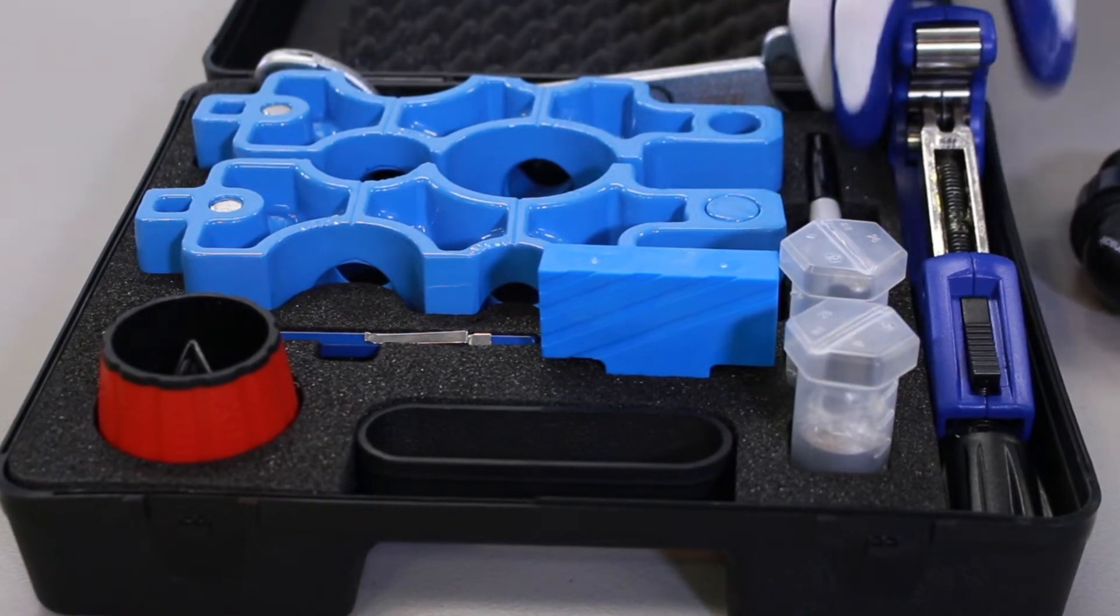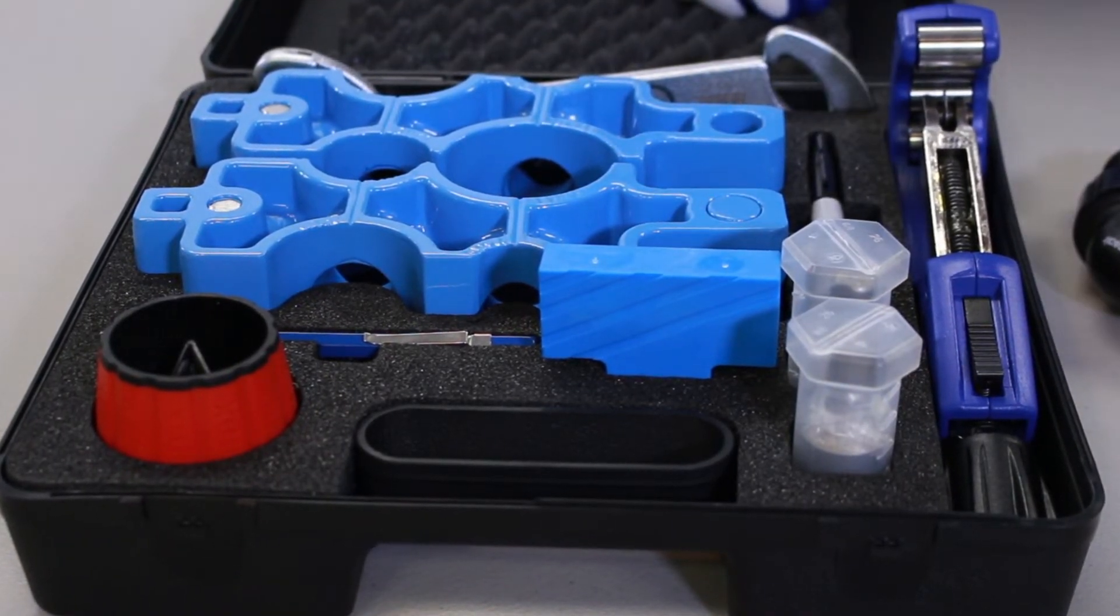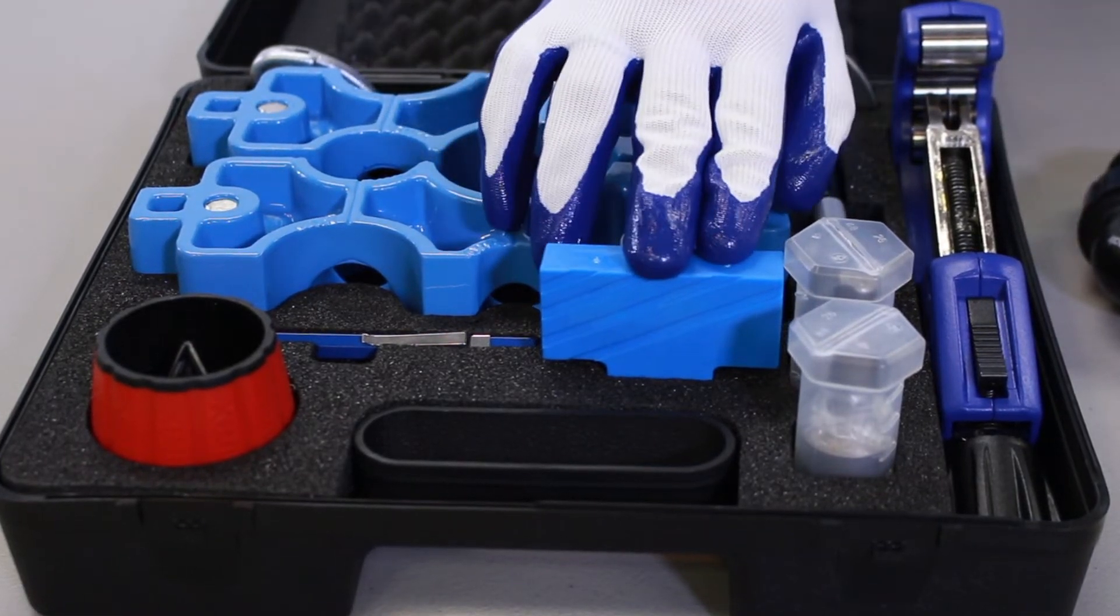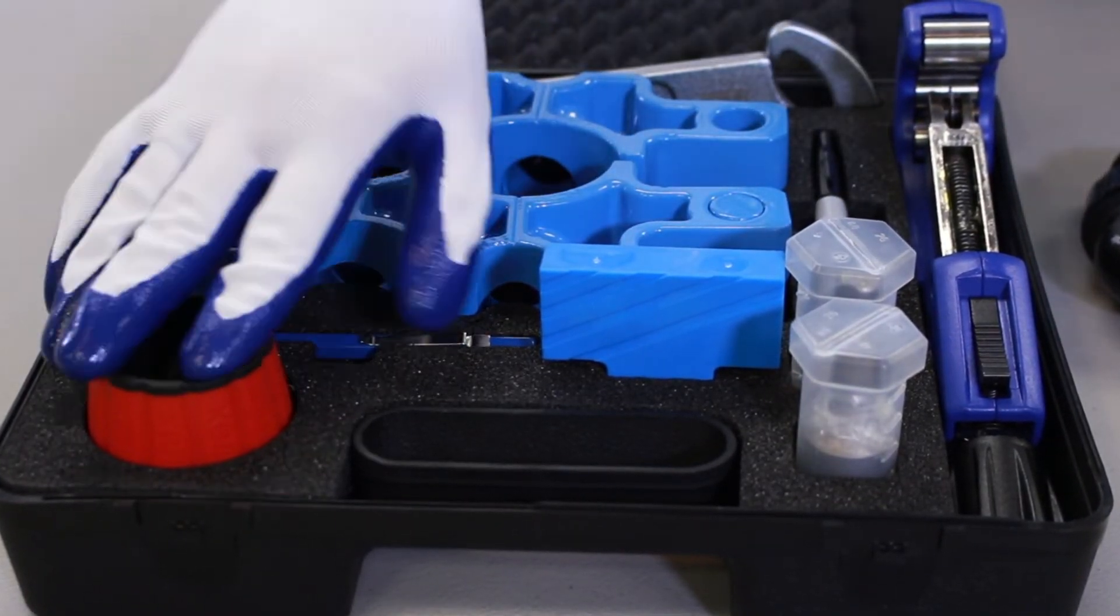The first thing that we're going to use is our cutter. The second thing we're going to need is our Sharpie. We're going to need our depth of insertion marker, and we're going to need our reamer.